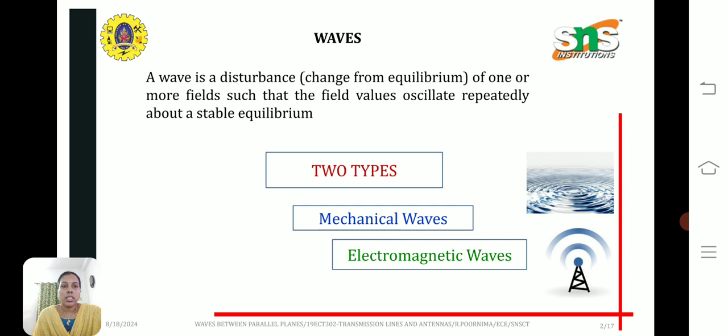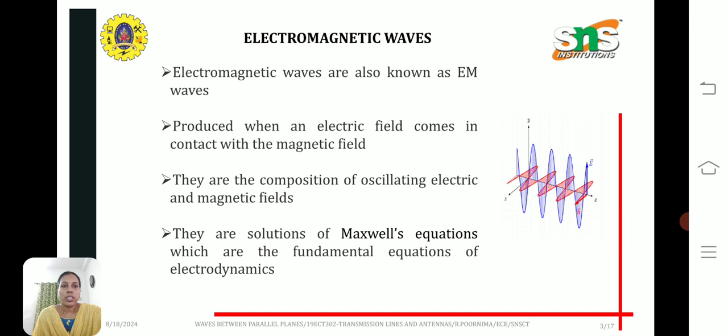Basically there are two types: mechanical waves and electromagnetic waves. Electromagnetic waves, also known as EM waves, are produced when electric field comes in contact with the magnetic field. They are the composition of oscillating electric and magnetic fields. These are solutions of Maxwell's equations, which are the fundamental equations of electrodynamics.